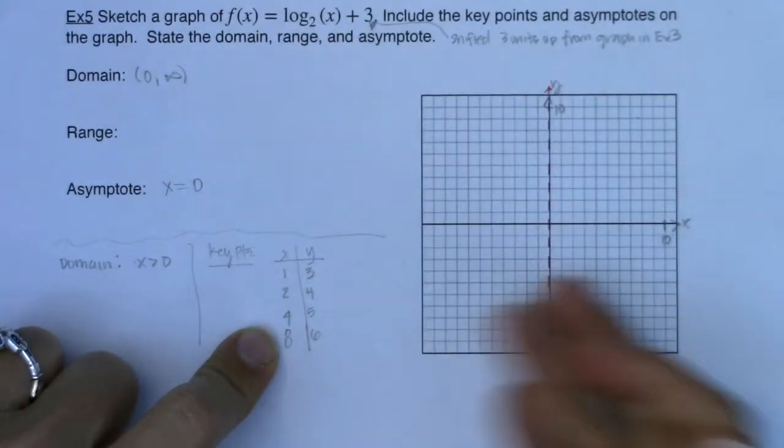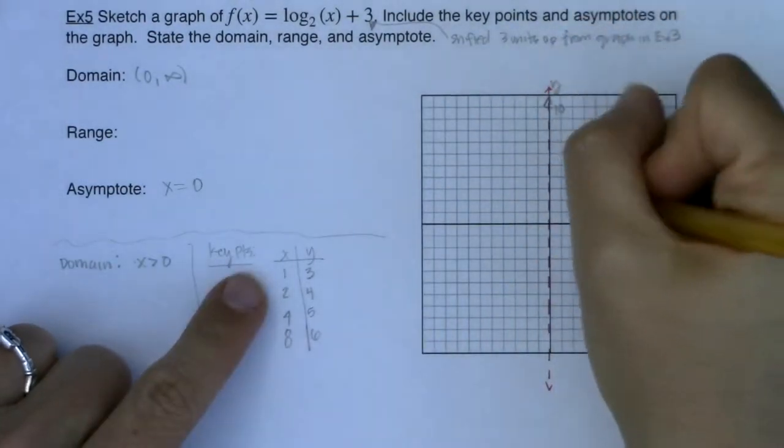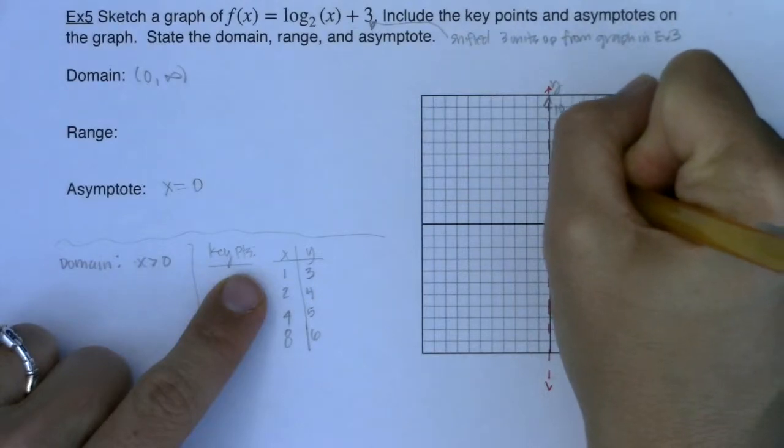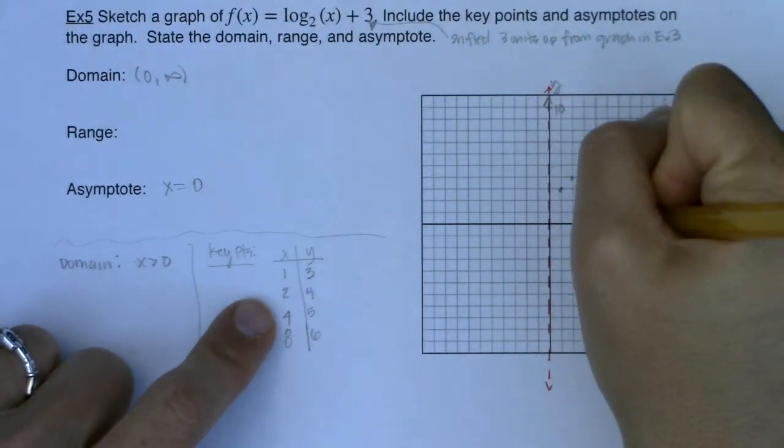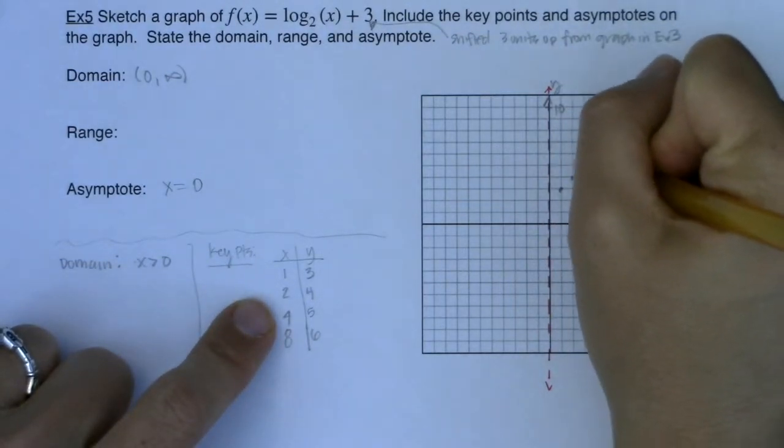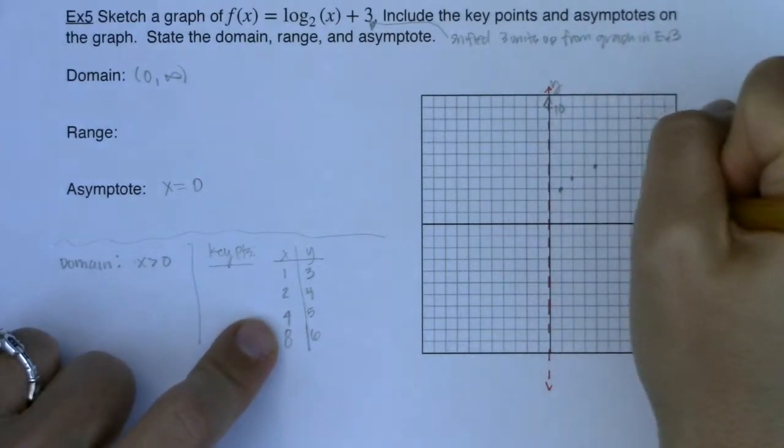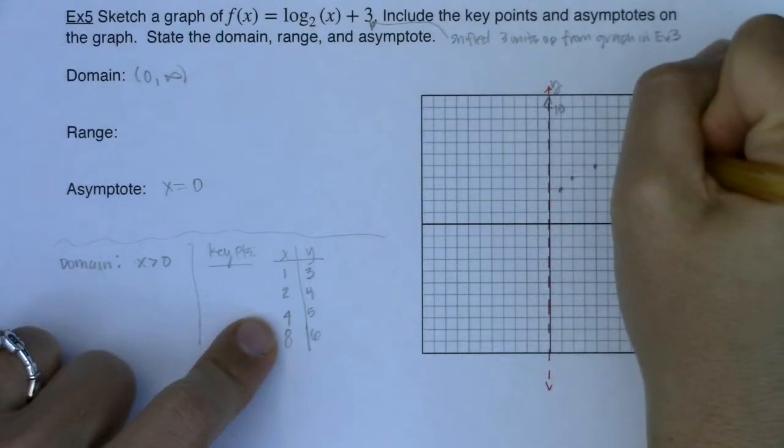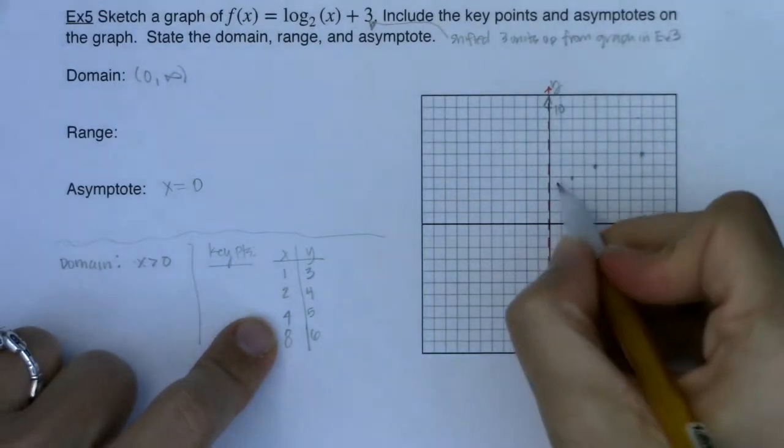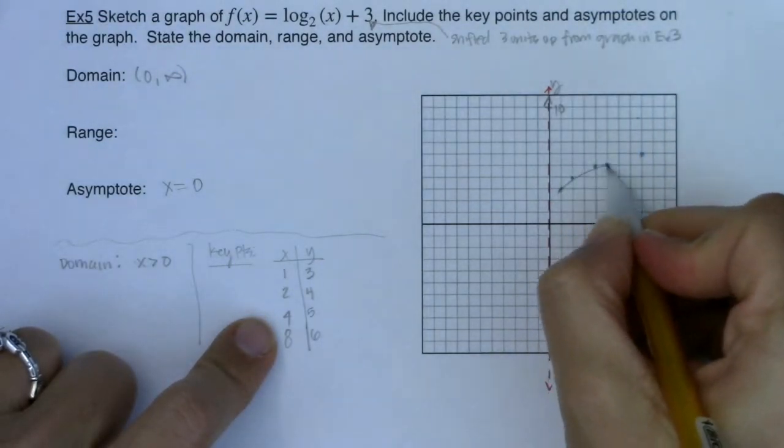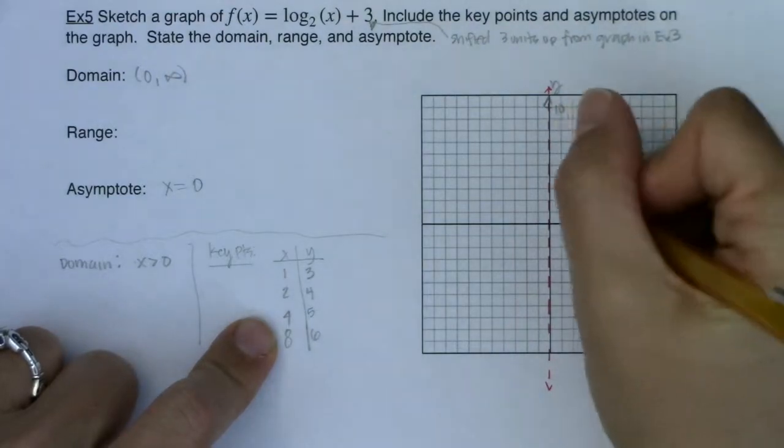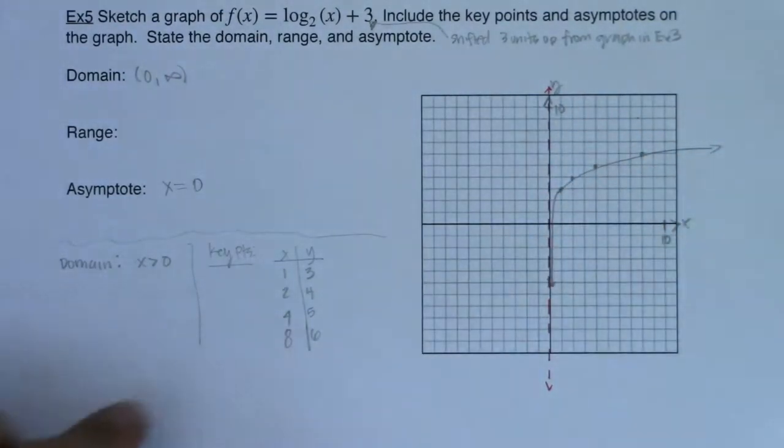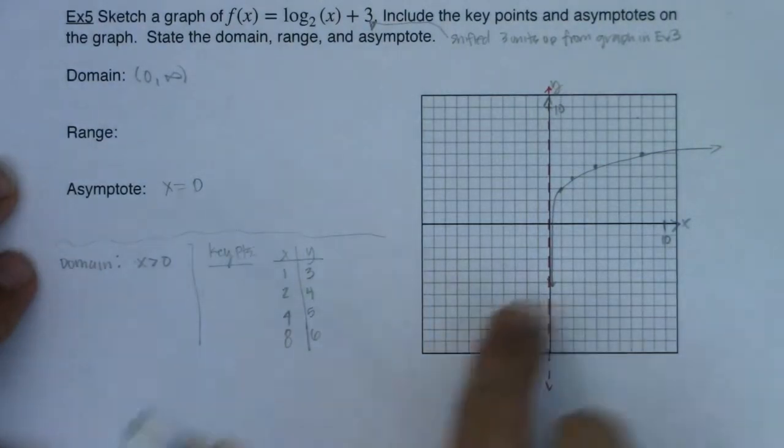All right, so there we go. Let's go ahead and plug these in. We've got (1,3), (2,4), (4,5), and then (8,6). I can see my logarithmic function, that's looking pretty good.